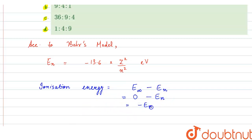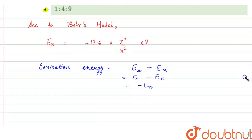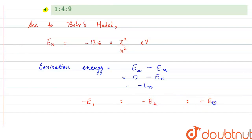So here we have to find out the ratio of the energy required to remove the electron from the first three orbits. Basically we have to find out the ratio of minus E1 : minus E2 : minus E3.